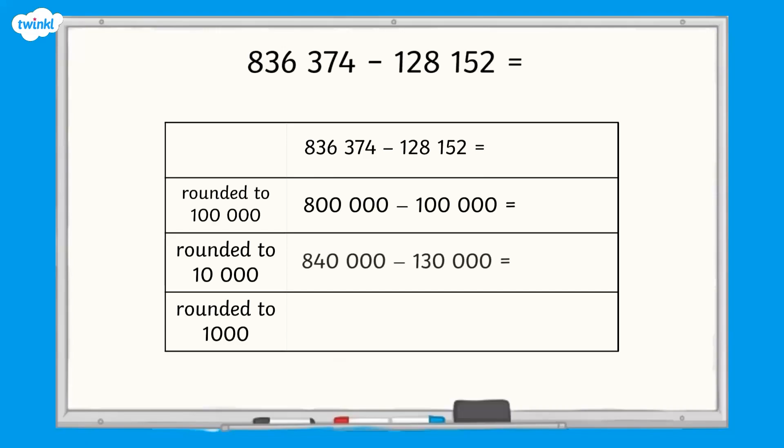840,000 subtract 130,000, or 836,000 subtract 128,000. Pause here and work out the answers to these three possible estimations mentally.